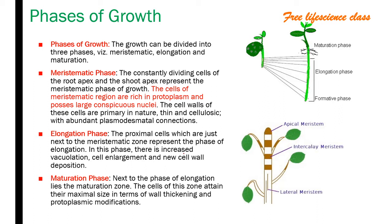There are three phases of growth: the meristematic phase, the elongation phase, and the maturation phase. In the meristematic phase, cells are constantly dividing. The apical meristem of the shoot as well as the root is continuously dividing — this is the meristematic phase.